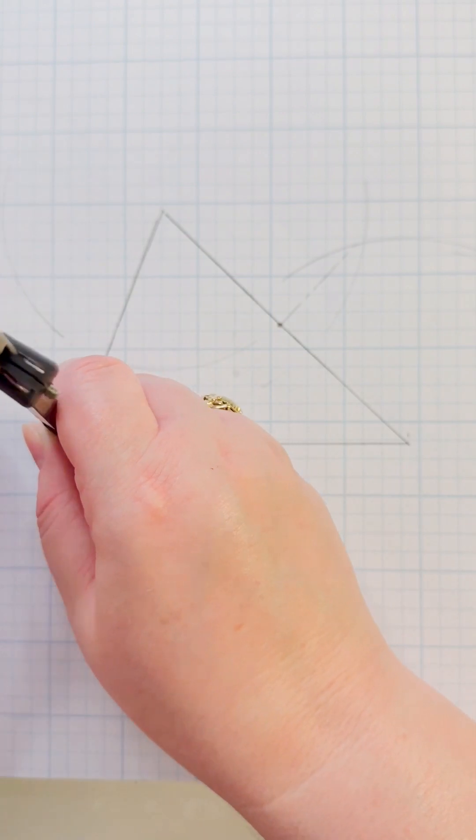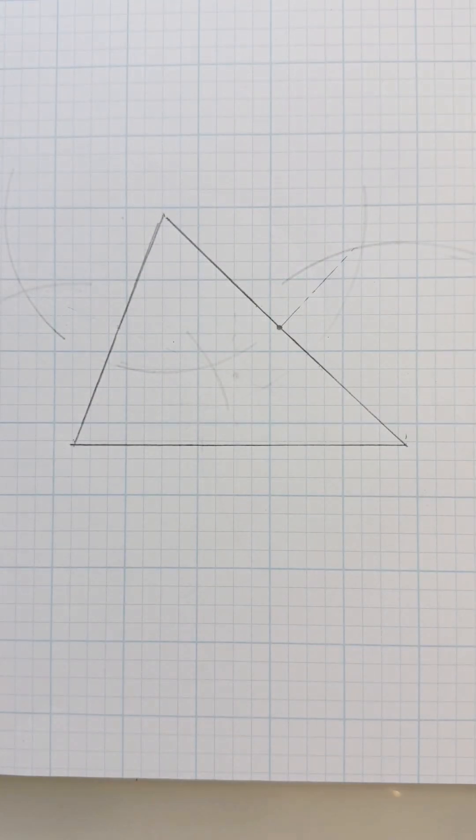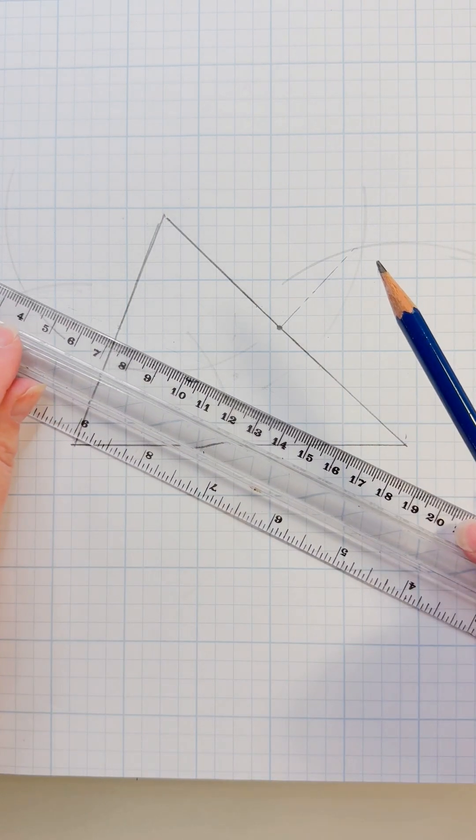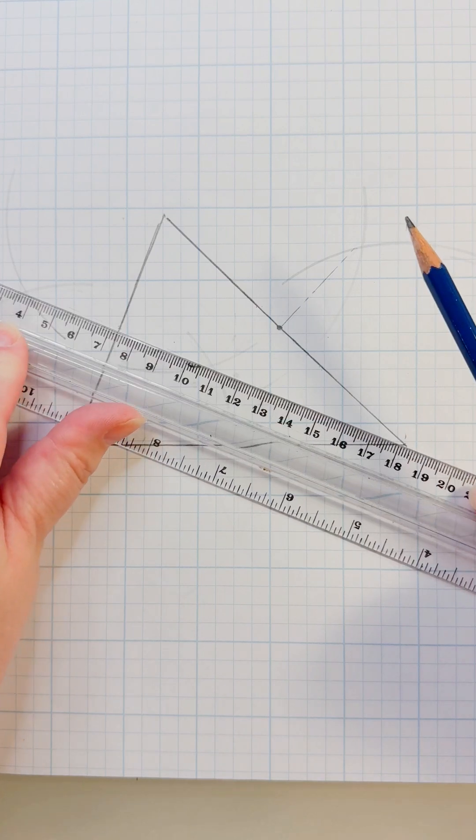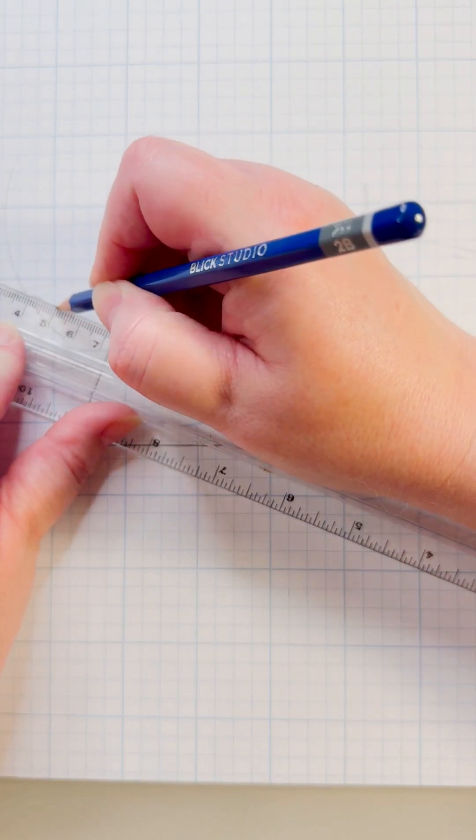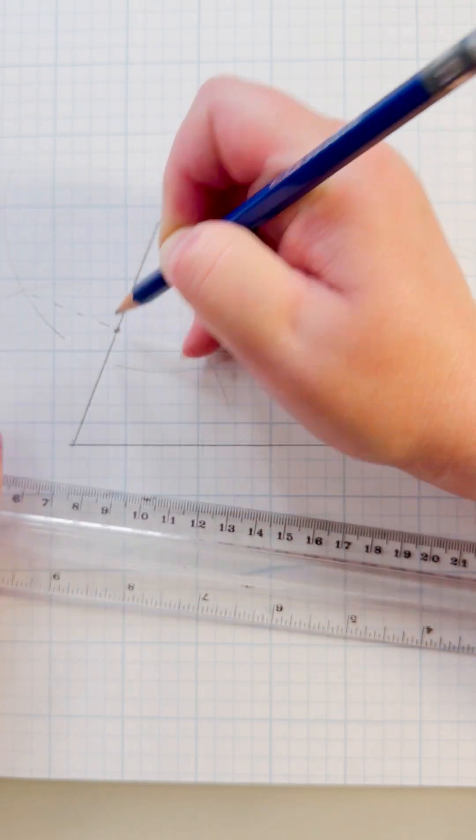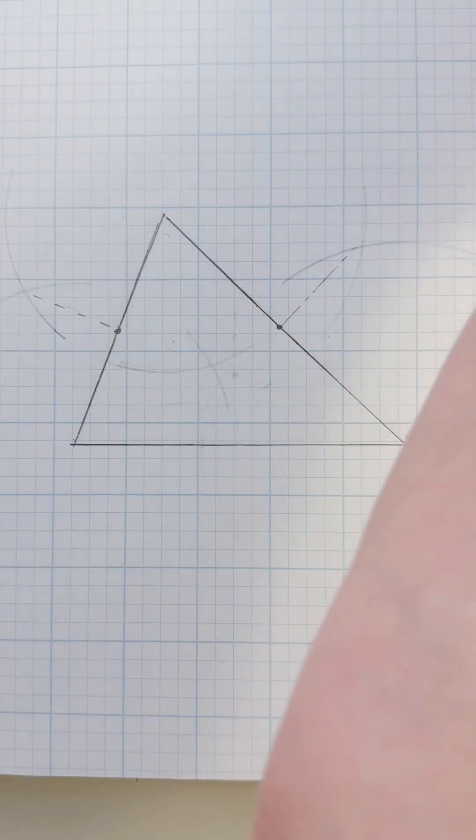Mark above, mark below. Make sure that they crisscross. Line up the intersecting marks above and below the line. This is the center of this line. Now we're going to do the same thing for the third line.